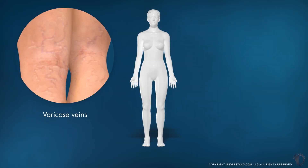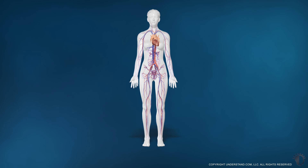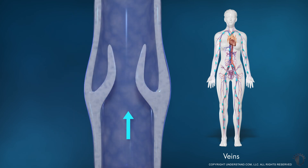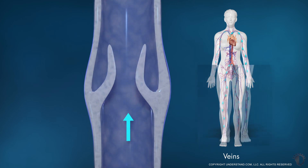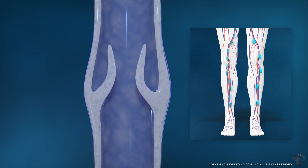Both varicose and spider veins are caused by problems with the way the blood flows through the veins. The circulatory system is made up of a network of blood vessels called arteries and veins. Arteries carry oxygenated blood from the heart to the rest of the body, while veins transport blood from the body back to the heart and lungs. Veins have one-way valves to prevent blood from flowing backward as it travels toward the heart. Veins in the legs are subject to large amounts of pressure as they must work harder to carry blood upward to the heart against the force of gravity.